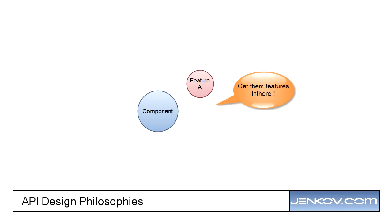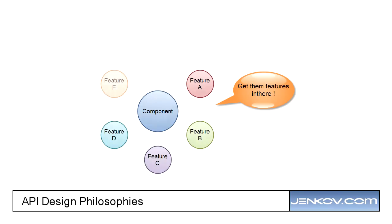The maximalistic software school or philosophy is trying to include as much as possible — as many features as possible in their software and their components. In general, they really want their component to cover as many use cases as possible.